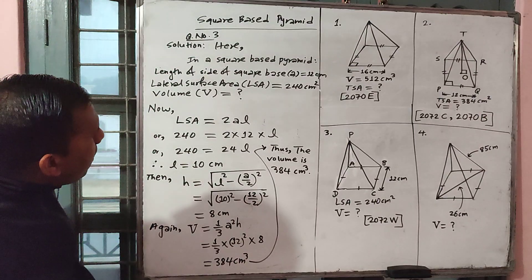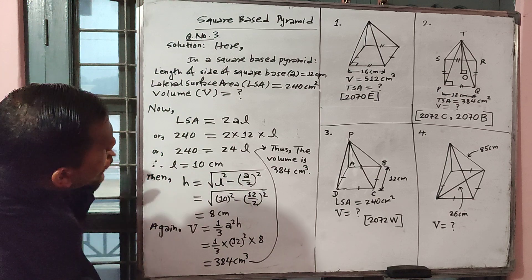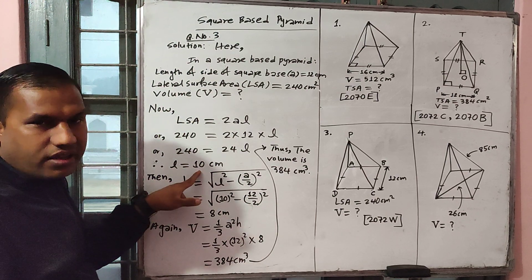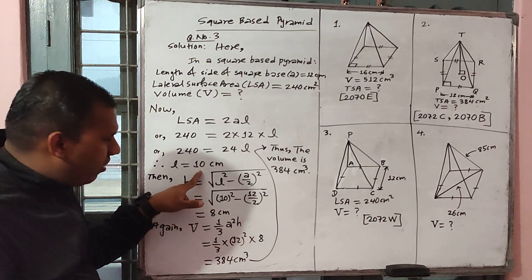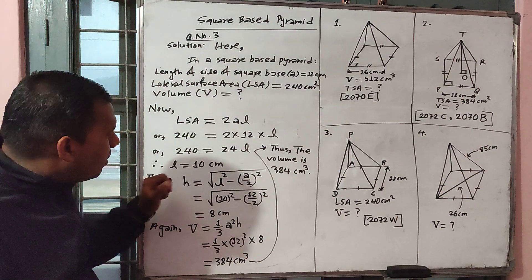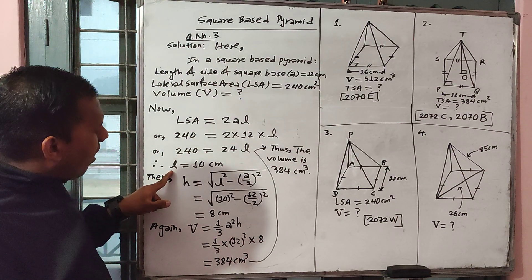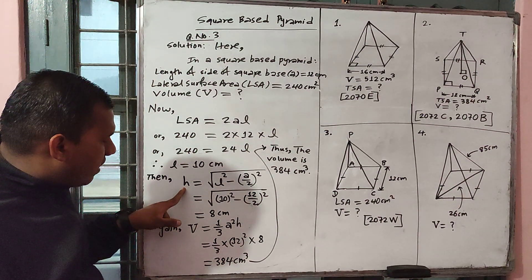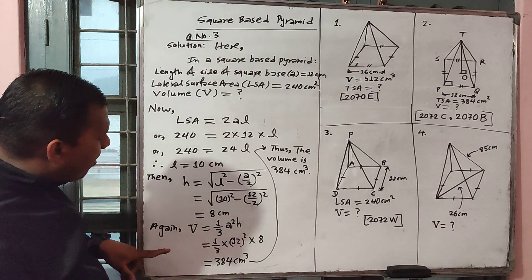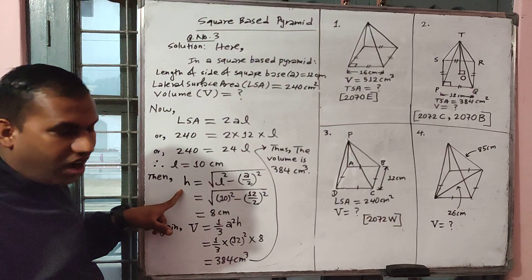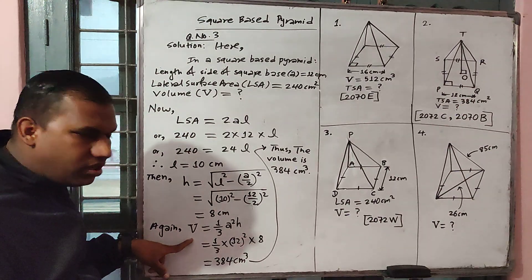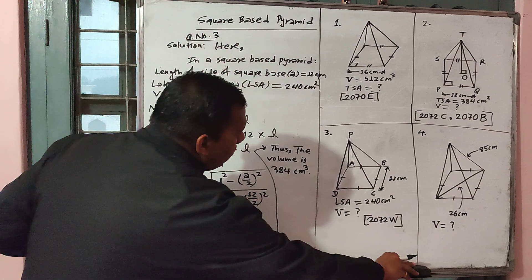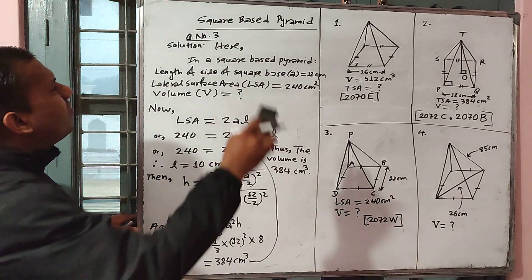Okay students, in question number 3, first of all by using LSA we can get the slant height of the square base pyramid. After finding slant height we can find vertical height, and finally after finding vertical height we can get the volume. Now we go to question number 4.